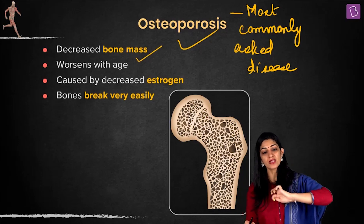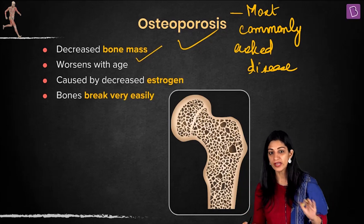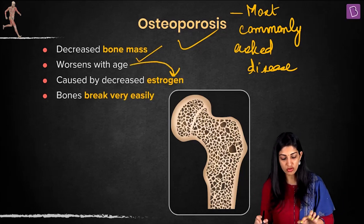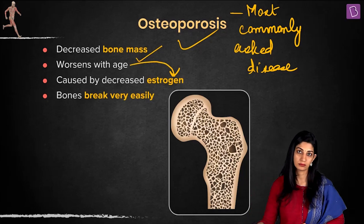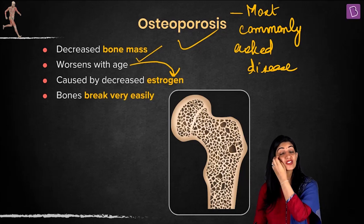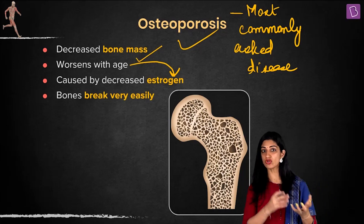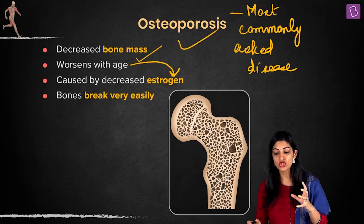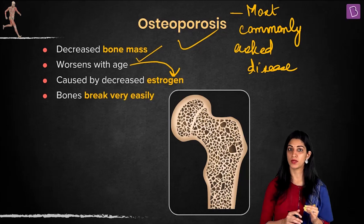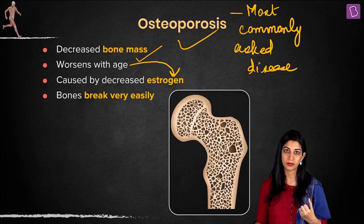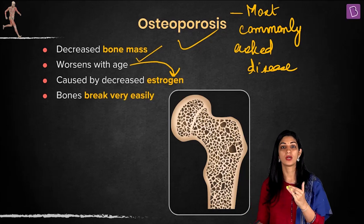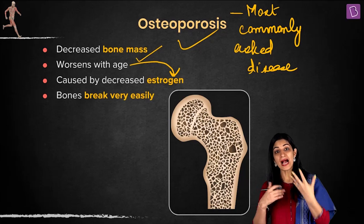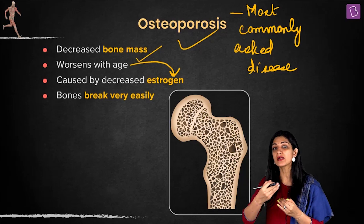Osteoporosis worsens with age, and the concepts of estrogen and age are related. In menstruating women, estrogen is released and is very important for bone health — it keeps calcium salts intact. When a woman reaches menopause, the menstrual cycle stops, estrogen levels drop, and as a result the bones start losing their calcium.